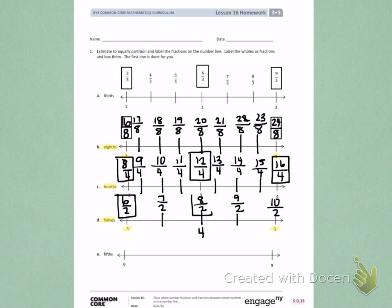I should put a box around 8 halves, because it represents the whole number 4. And I should put a box around 10 halves, because it represents the whole number 5.